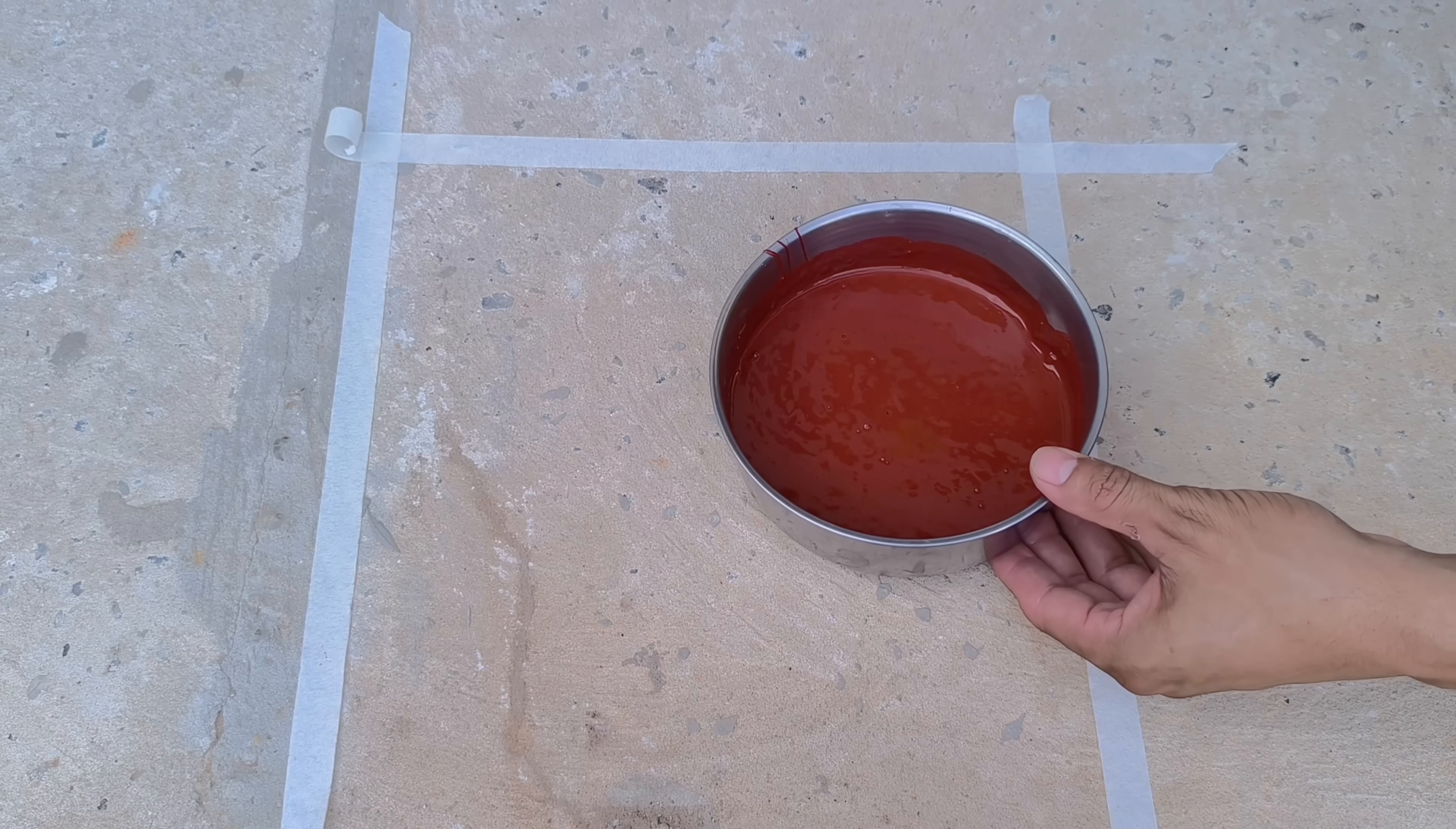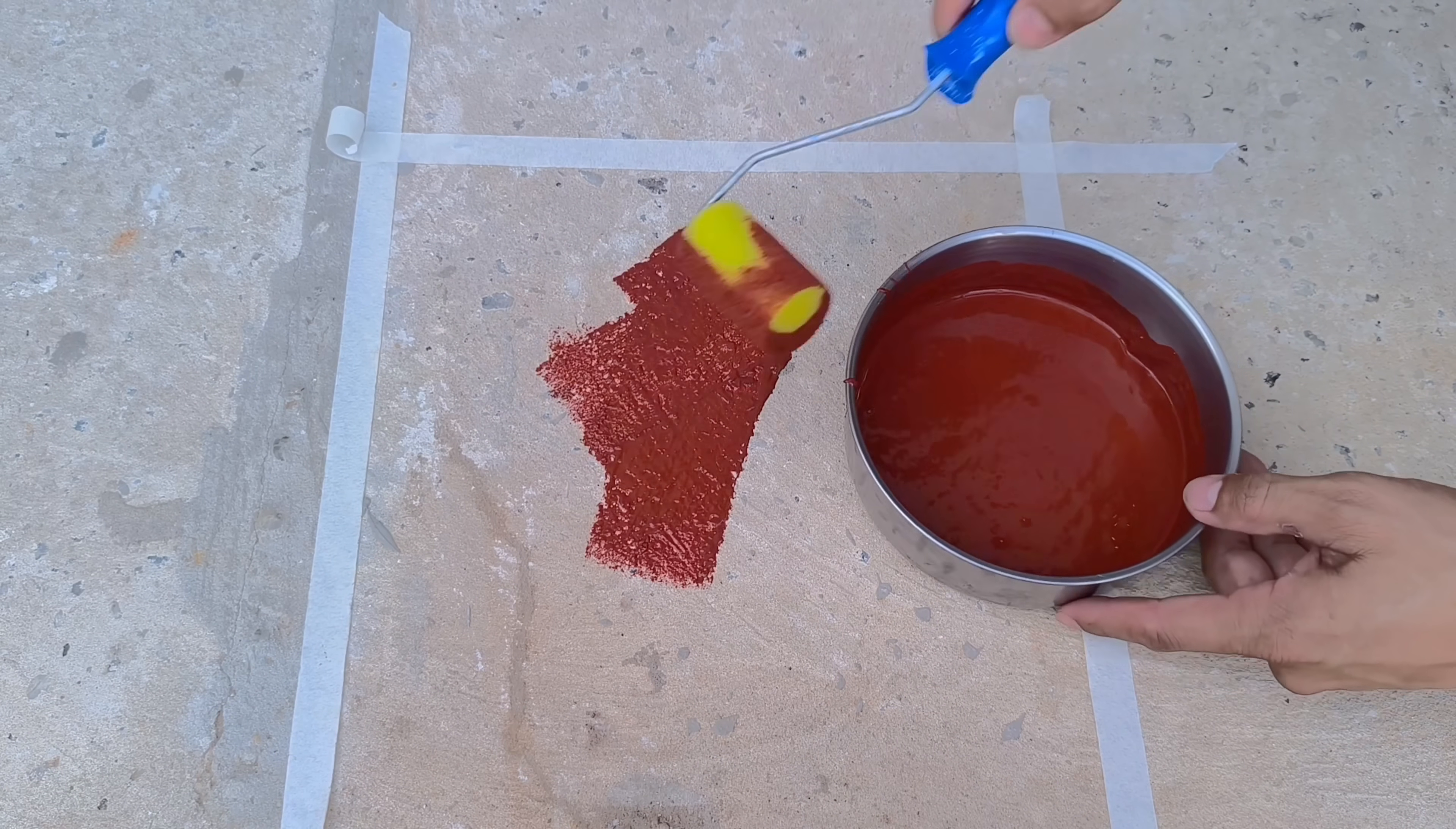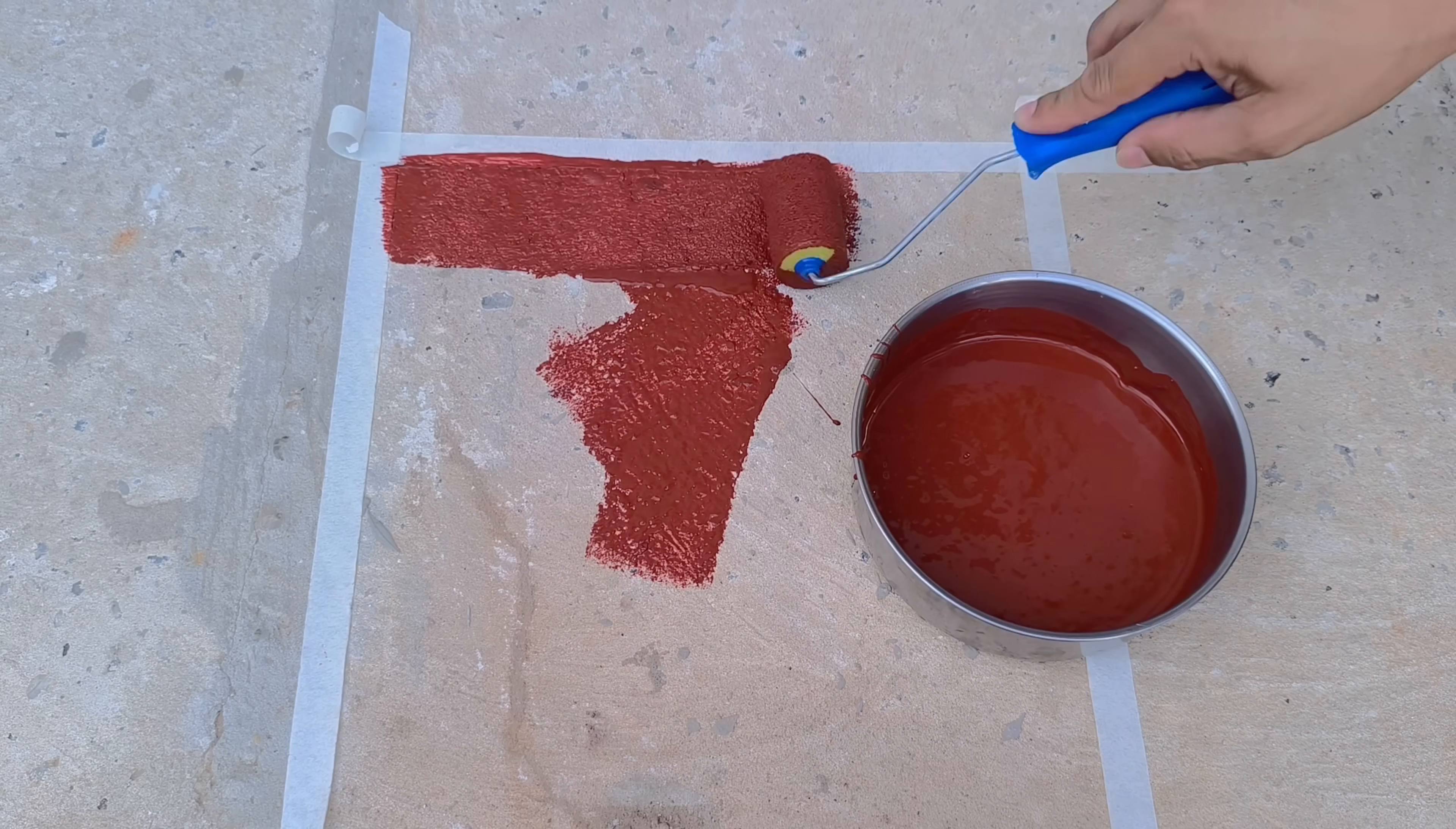To apply, I use a small roller, but you can also use a brush if you prefer more precision in smaller areas or difficult corners. I spread the mixture slowly over the surface, ensuring each section receives even coverage. The first layer adheres firmly, creating a solid base, although it has a slightly matte appearance, which is natural due to the cement in the composition.